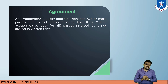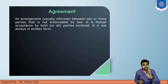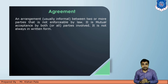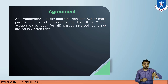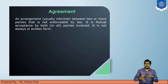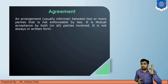Next is agreement. An agreement is different from a contract — a contract is enforced by law, but an agreement is not compulsory and not always enforced by law. An agreement can be made orally and is generally informal between two or more parties. It is a mutual acceptance by both parties and is not always in written form.